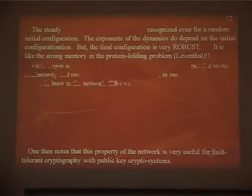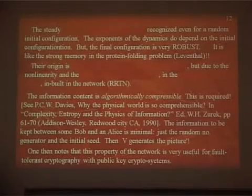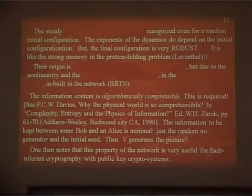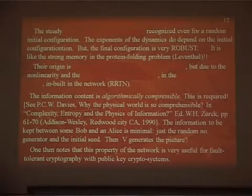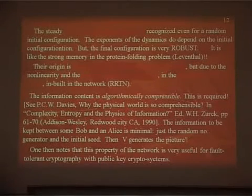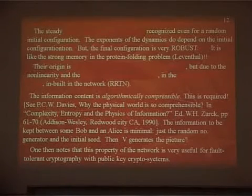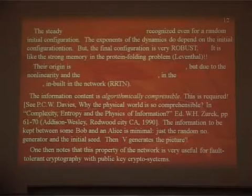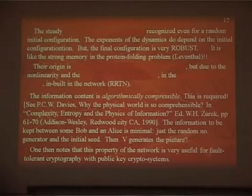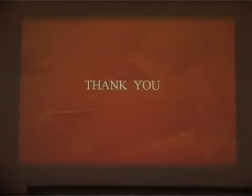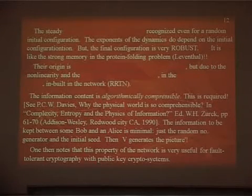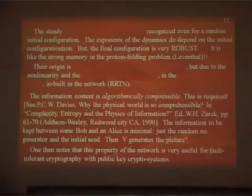The memory attribute is very, very important — from wherever we start, the system goes to the same final value. The system can also go towards chaotic situations in the RRTN. Because of this memory property, there are very important applications in principle for cognition, cognitive properties, fault-tolerant cryptography, and public key cryptosystems. This has been published in the IEEE Computer Society journal. That's all I would like to say.